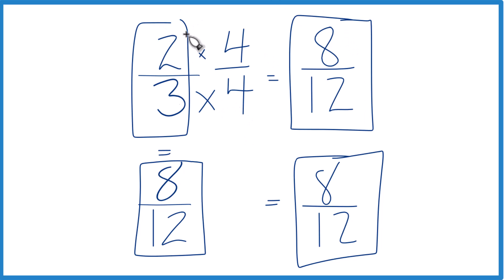So that's it. Two-thirds and eight-twelfths, they're equivalent. They have the same value.